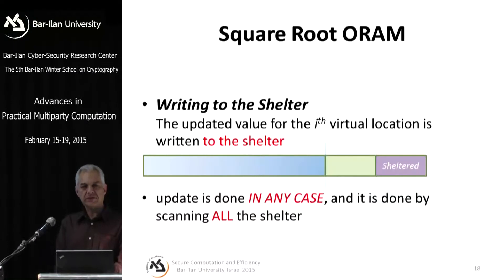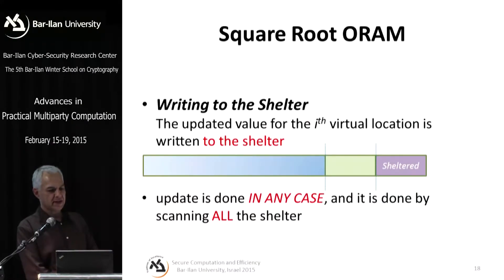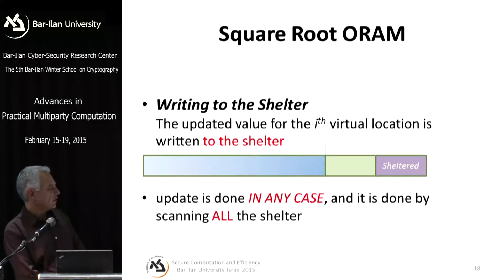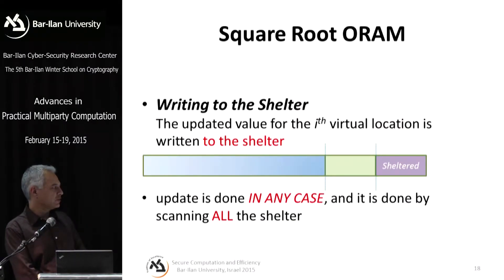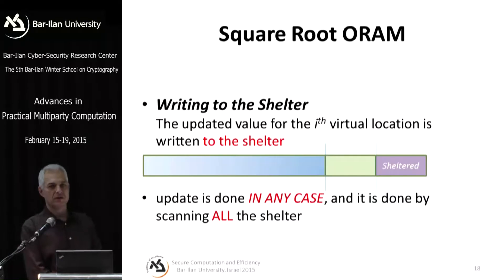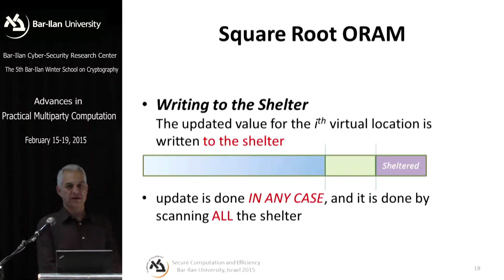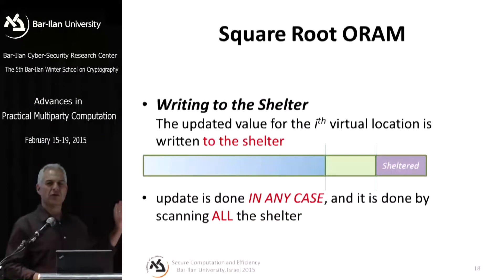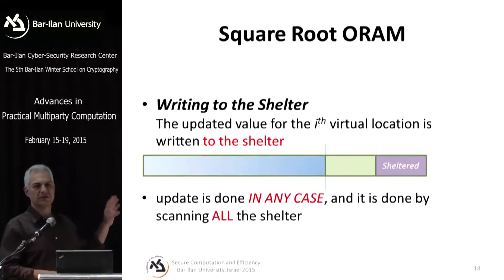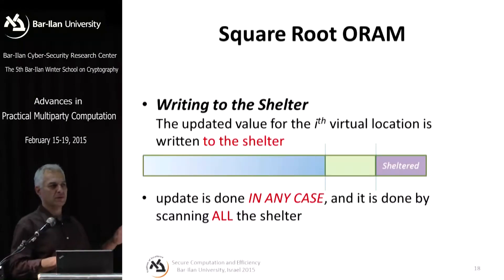Importantly, whenever we read an item, we write it back to the shelter regardless of whether we changed it, and we hide where we're writing by scanning the shelter. We have to do O(√n) reads and writes over the shelter. There's an obvious problem: the shelter is size √n. After √n read-write operations, the shelter becomes full and we need to do something.